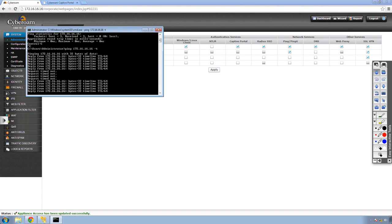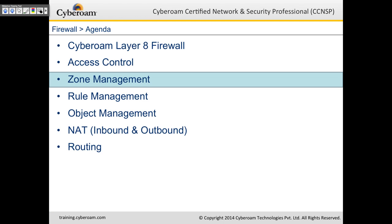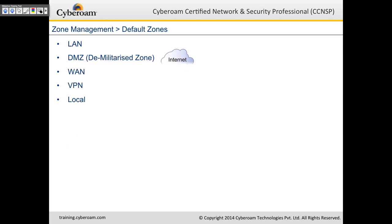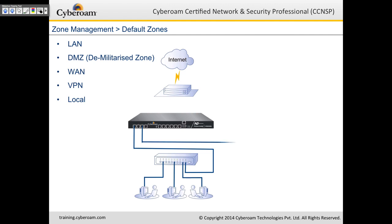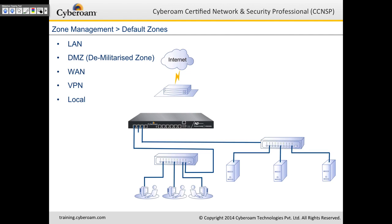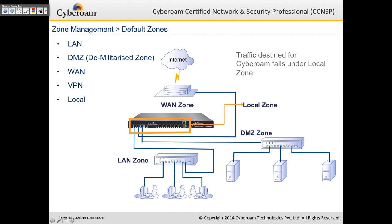That brings us to the end of this lab. Let's proceed with the presentation and look at zone management. The CyberROM default zones are LAN, DMZ (demilitarized zone), WAN, VPN, and Local. These are the default zones provided by CyberROM. The VPN zone is automatically created so that when you configure VPN, you use this zone to create rules from and to VPN.